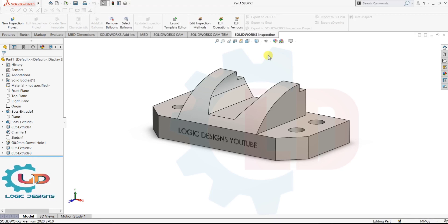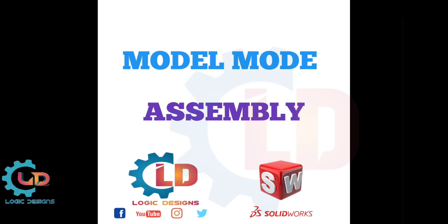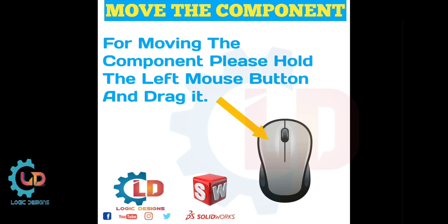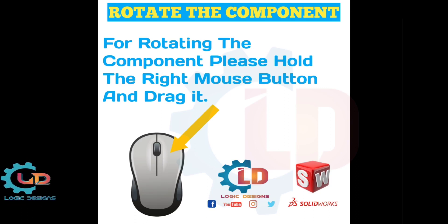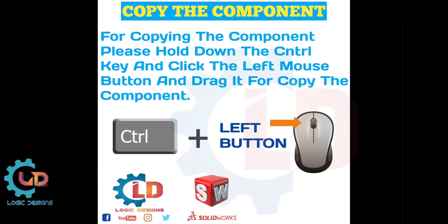Now we will discuss mouse button shortcuts in the assembly environment. In assembly environment we will discuss move, rotate, and copy commands. For moving the component, please hold the left mouse button and drag it. For rotating the component, please hold the right mouse button and drag it — please remember right mouse button is the shortcut for rotating the component. For copying the component, please hold down the Control key and click the left mouse button and drag it. Please remember: Control key plus left mouse button is used to copy the component.